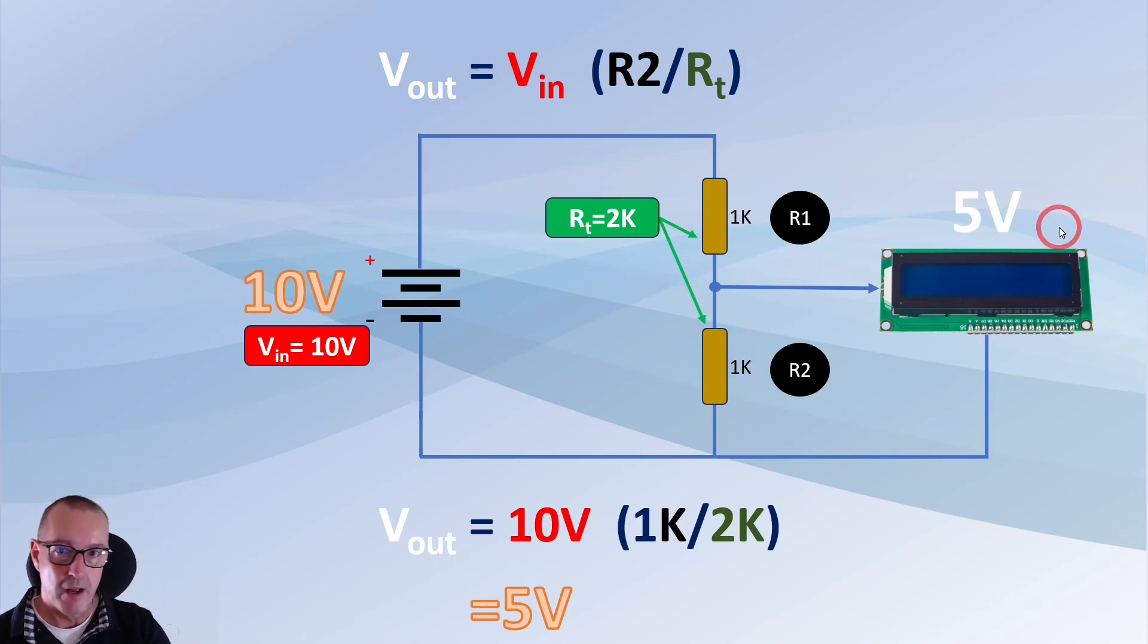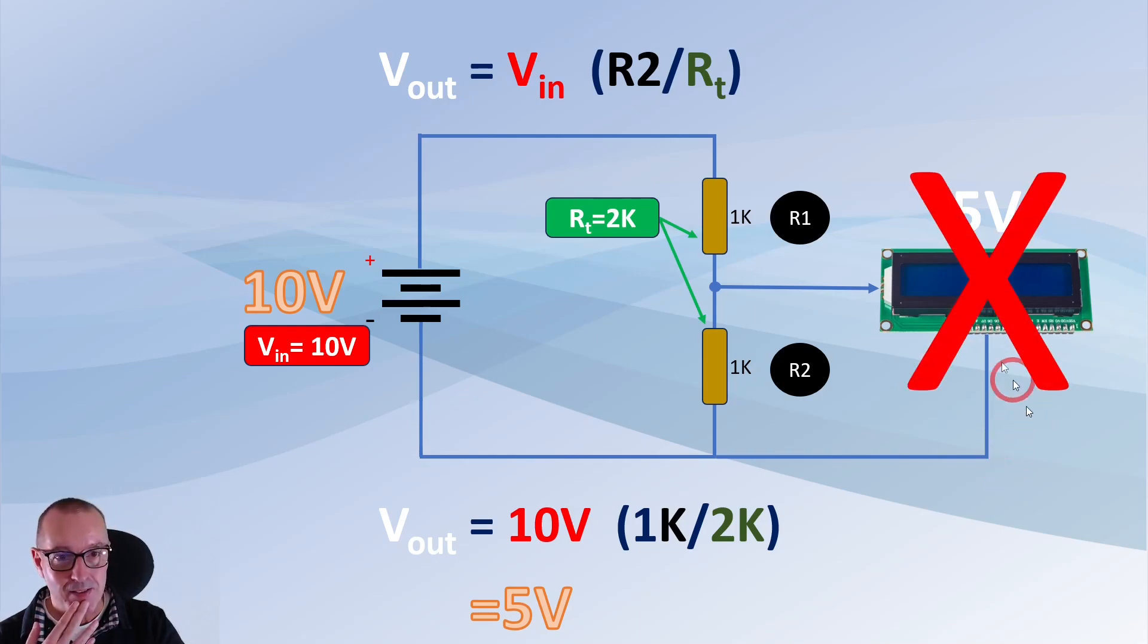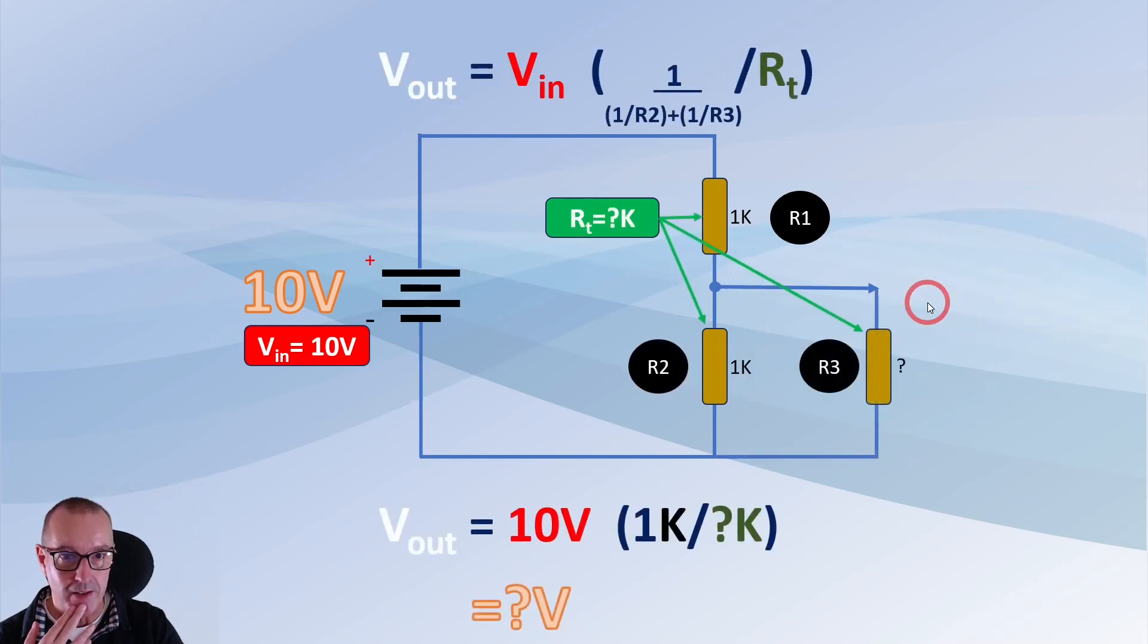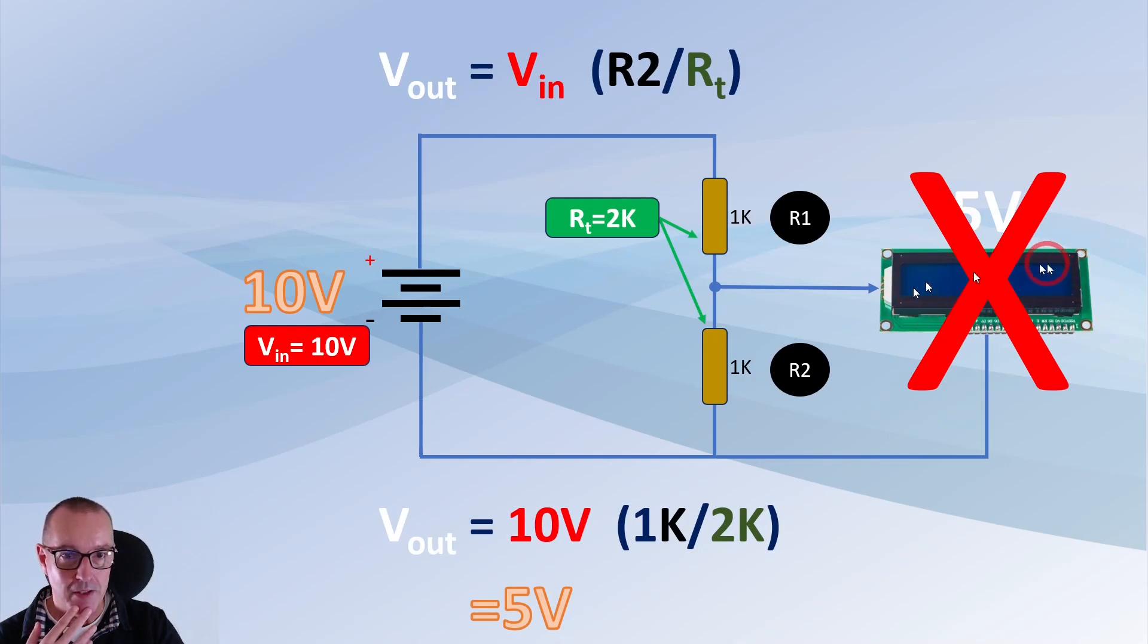You might think oh great I can run a 5 volt device from that like my LCD I've shown there. But no you can't because actually that is putting a load on the circuit. It's just like putting another resistor here. That LCD display is going to have effectively current running through there with some resistance of course. But it will have current running through there as well.